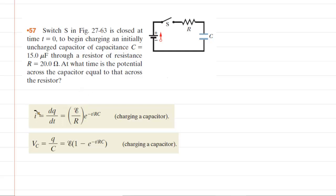So if we look at the first expression, we can see that the current that's flowing through the resistor is equal to this expression right here under the condition that we're charging a capacitor. And then similarly, we can see that the potential across the capacitor is equal to this expression here, again, under the condition of charging.